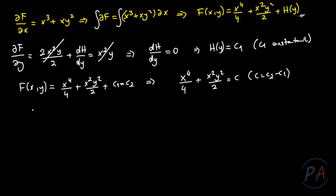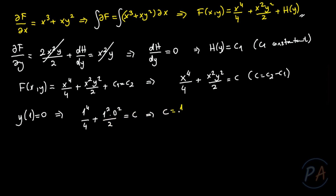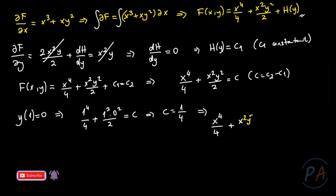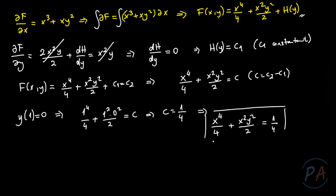But I have to determine the particular solution satisfying the initial condition y(1) = 0. Substituting x = 1 and y = 0 into the equation: 1⁴/4 + 1²·0²/2 = c, giving c = 1/4. So the solution of the initial value problem is x⁴/4 + x²y²/2 = 1/4.